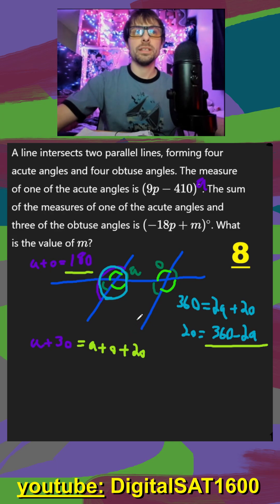So for our final formula down below, I'm going to do 180 plus, and then our two O, it's going to be 360 minus two A. And then remember, the whole point of getting this formula was we can set it equal to this. So that's going to be equal to negative 18P plus M.